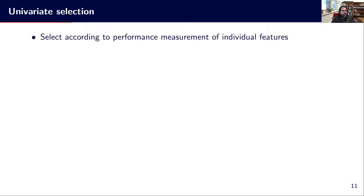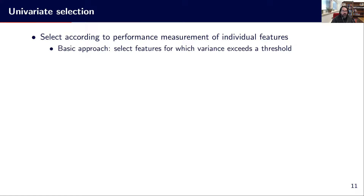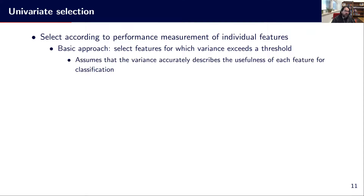We may first look at univariate selection, where we look at the performance of individual features and select according to performance measurements. A basic approach is to look at the variance over these features and select the ones with variance over a given threshold. This is simple — it is one way to pick up only the features that have some variance. The assumption is that variance accurately describes how useful a variable is for classification, though this is far from always true.